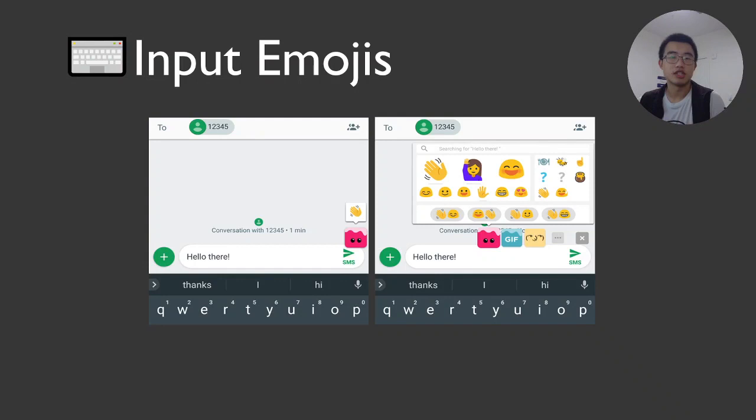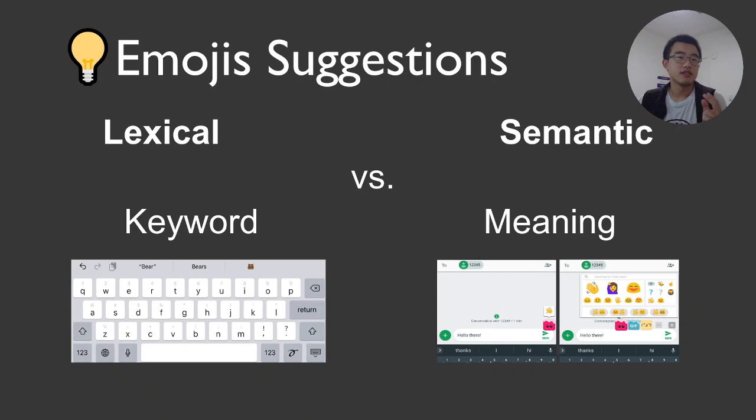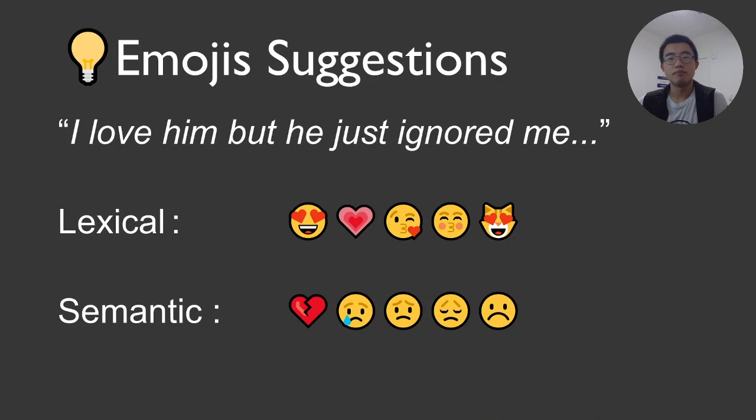There is also another suggestion function called semantic-level emoji suggestions, where emojis are suggested based on the meaning of the input text. For example, a mobile app called Django provides semantically related emojis while you are typing. So we have two suggestion systems: lexical, which is based on keywords, and semantic, which is based on meaning.